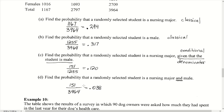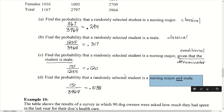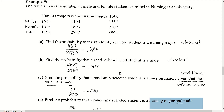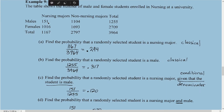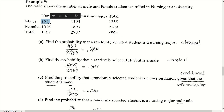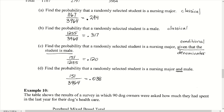In the last example for this table, we find the probability that a randomly selected student is a nursing major and a male. We're looking for an individual with both qualities — both a nursing major and male. There were 151 individuals meeting both criteria out of our total of 3,964, giving a probability of 0.038.